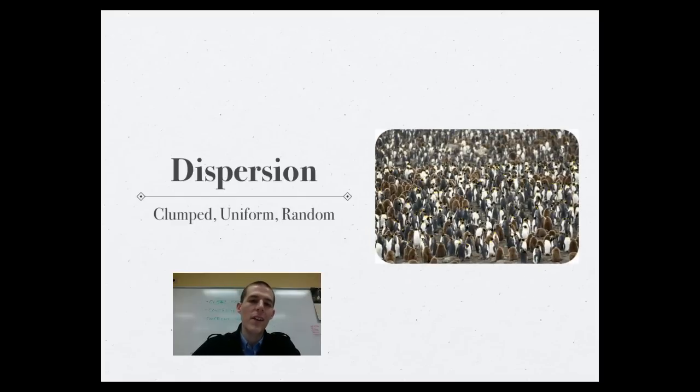The next type of distribution pattern is a uniform pattern. And this is seen a lot of times in organisms that have territories that they defend. So some birds, what they will do is they will build nests on the ground. The bird will basically sit in its nest and peck anything that comes within the reach of its beak. So as all of these birds sit in their nests and defend their territory, each one is going to be placed just outside of the reach of all of the others, giving you a uniform distribution pattern.